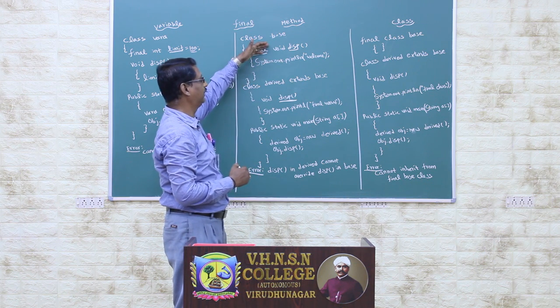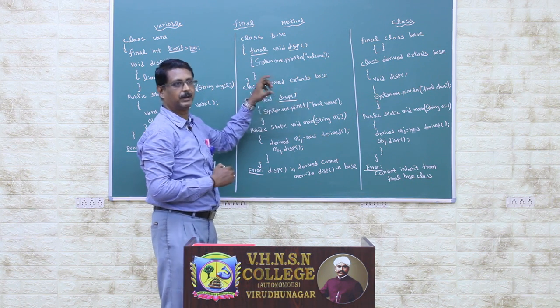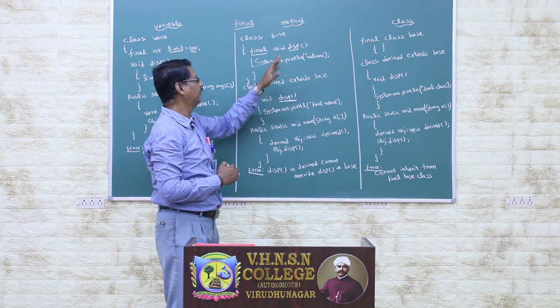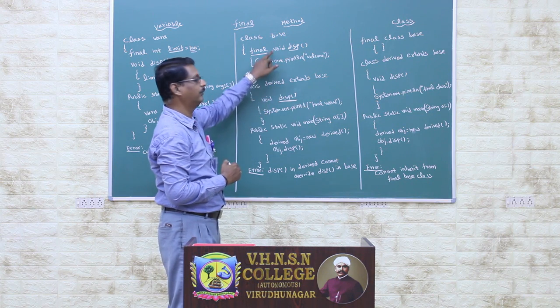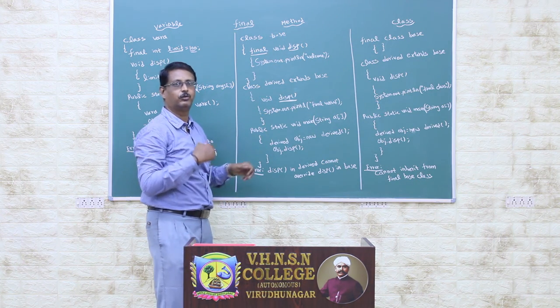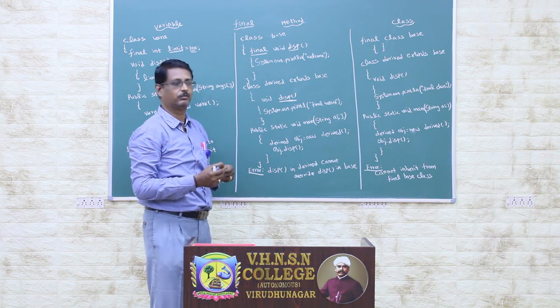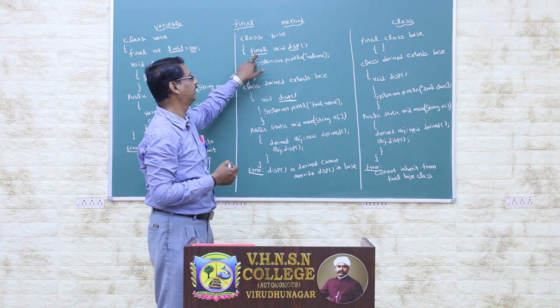In the base class there is a derived class. If you define a method with the same name and same return type, and try to override the display method in the derived class, this will cause an error.